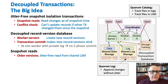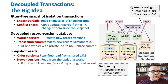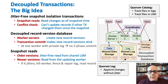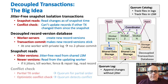The catalog can track files in logs and files in the LSM. Newer versions are read from the updating worker that recently committed them. But that worker might go slow, and if it jitters, you need to kill the worker, fence and repair its log so it can't do any more work, and then read the record from the repaired log.